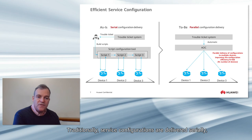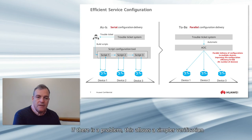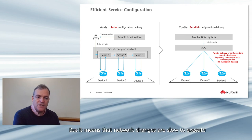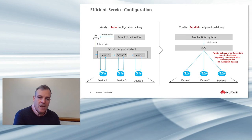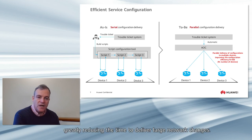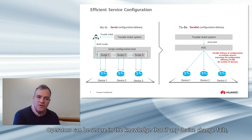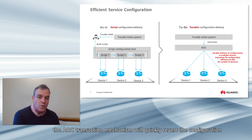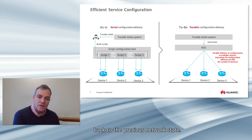Traditionally, service configurations are delivered serially and scripts are executed on devices one by one. If there is a problem, this allows simpler verification and easier coordination of network rollback, but it means that network changes are slow to execute and difficult to revert when there is a problem. AOC delivers service configuration to devices in parallel, greatly reducing the time to deliver large network changes. Operators can be secure in the knowledge that if any device change fails, the AOC transaction mechanism will quickly revert configuration back to the previous network state.